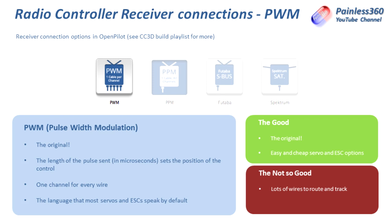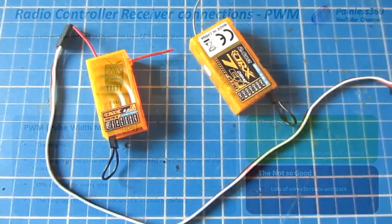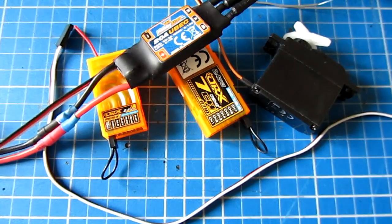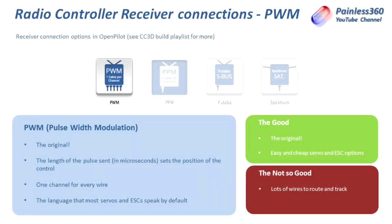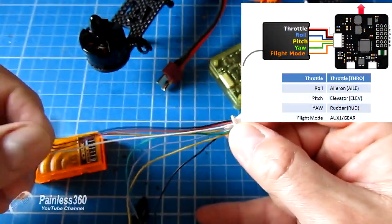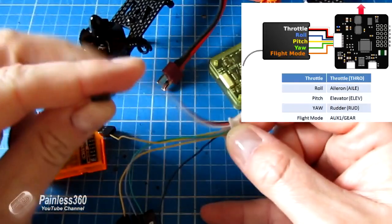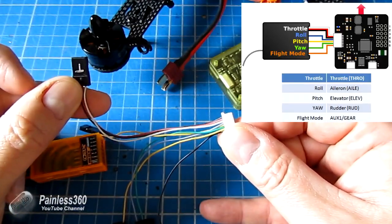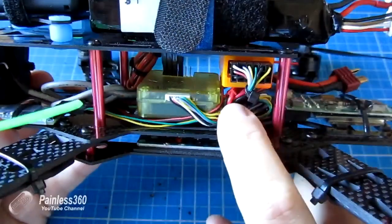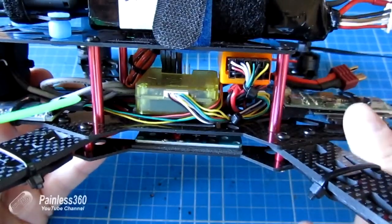That means it can get a little bit complicated. The good stuff: because PWM is the original standard, everything is really cheap, and if you have servos or speed controllers the chances are they will talk PWM by default. The downside is when you put these things on a model you end up having six or seven wires going from the receiver to the flight controller — not a problem, but you do have a bundle of wires to manage.